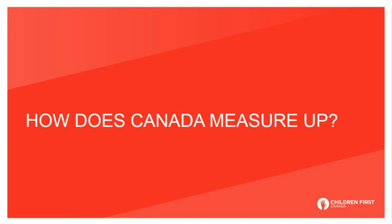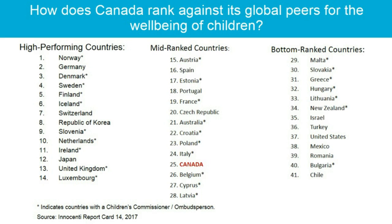Turning to where Canada measures up: we tend to think of ourselves as world leaders in democracy, human rights, and prosperity. But when it comes to the rights and wellbeing of our children, Canada is sadly not a world leader. Canada currently ranks 25th amongst 41 wealthy OECD nations for the wellbeing of children. We fall behind the usual suspects in Scandinavia but also behind countries like Spain, Estonia, Portugal, Czech Republic, Poland, and Italy — countries where we'd think our robust human rights, healthcare, and educational systems would be serving our kids, but they are not in the way we would expect.